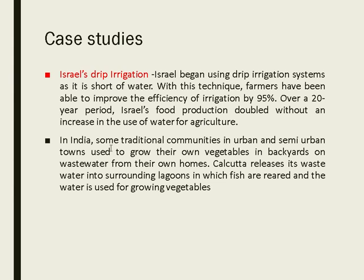In India, some traditional communities in urban and semi-urban areas grow their own vegetables in their backyards. Calcutta releases its wastewater into surrounding lagoons in which fish are reared and the water is used for growing vegetables.